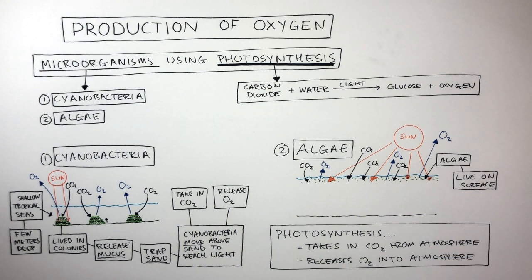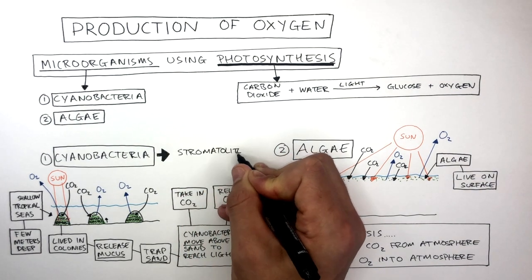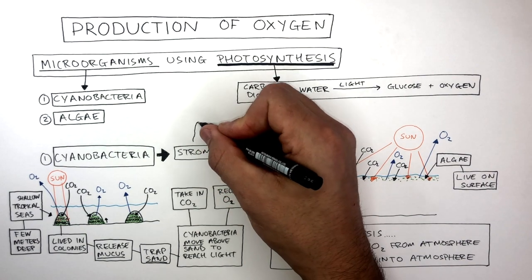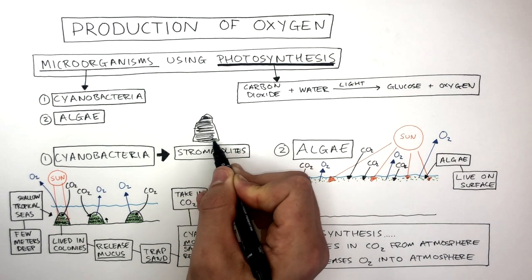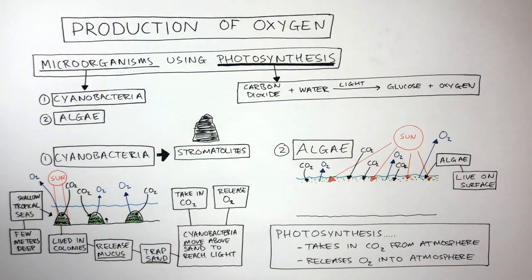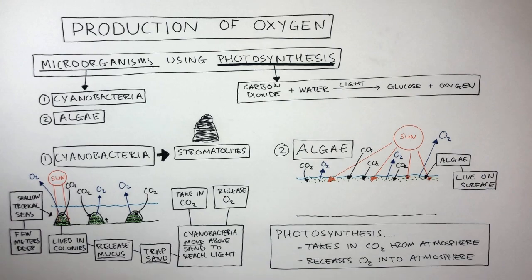Over millions of years, cyanobacteria form a rock called stromatolites, which is a layered rock that can be up to 3.8 billion years old and shows the layers of the sediment and cyanobacteria.